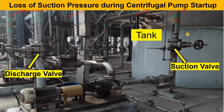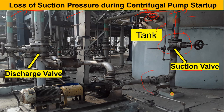First, let me explain the general arrangement. This is your tank, this is your suction nozzle, and this is your suction header. This is your suction valve — please let me know in the comments what type of valve this is, or whether it is open or closed. In the downstream of the suction valve there is a strainer. We have already discussed why we use the strainer. After that, this is your reducer, and this is your centrifugal pump.